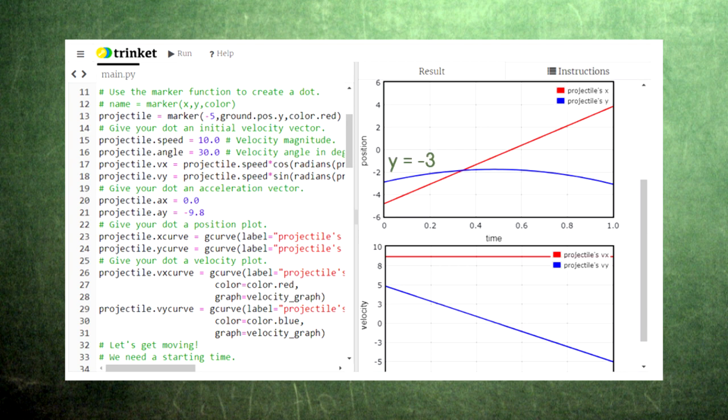To find the maximum height, we see that the projectile starts at y equals negative 3 and reaches a peak just above negative 2, giving us a height of at least 1. Let's see if we can get a better value for the height in a moment.